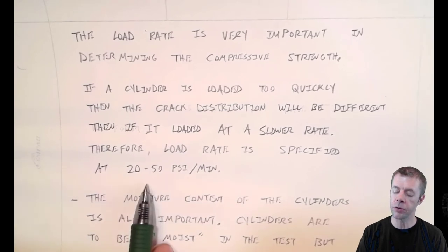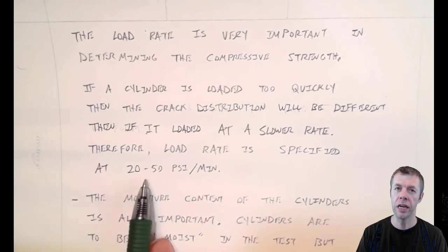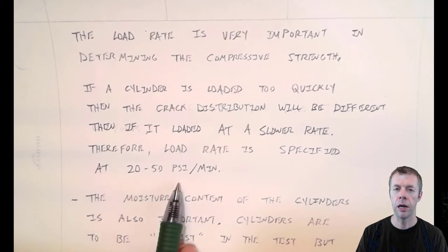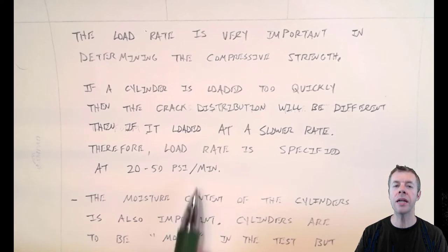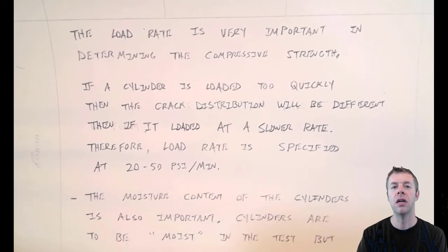And these samples should be loaded between 20 and 50 psi per minute. Now there's many automated compression machines these days. That means these are machines that are programmed to load at this rate, no matter what. They're pretty cool and they're useful to help reduce the variability in the test method.